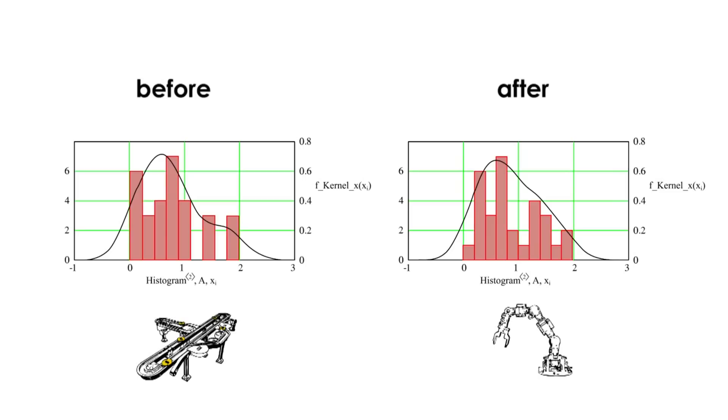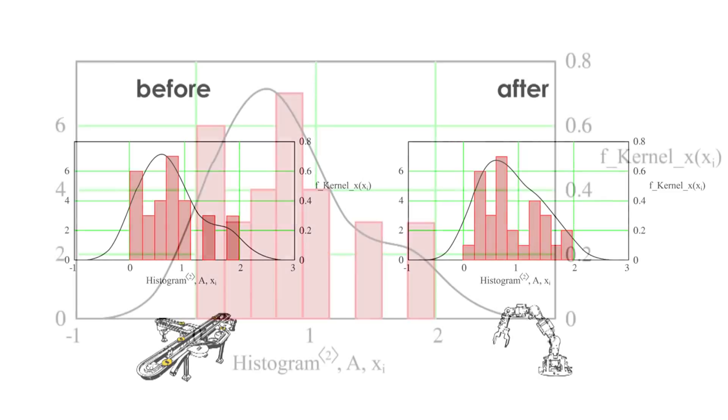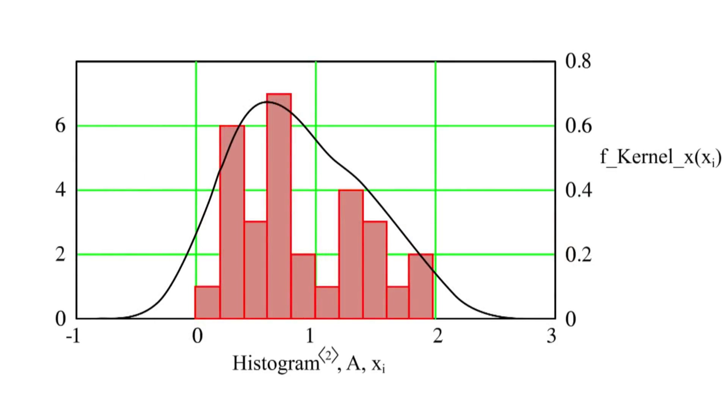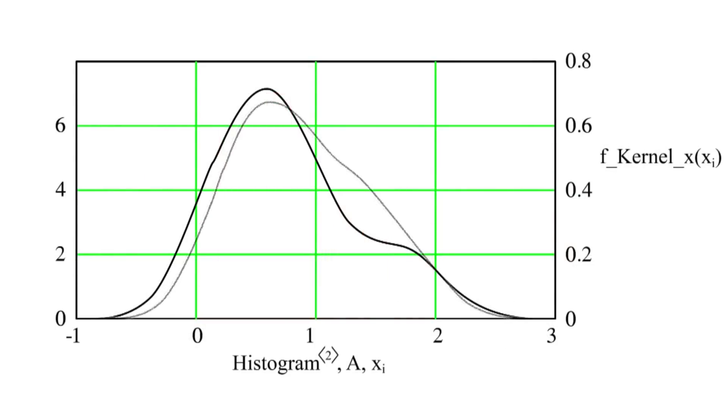If the manufacturing engineers had used this form of information before, they would never have proceeded with the change of the conveyor. The shape of the distribution does not correspond to the palette hypothesis.